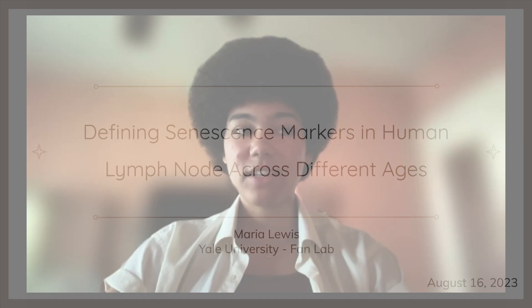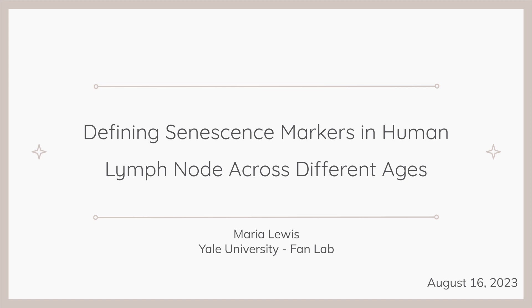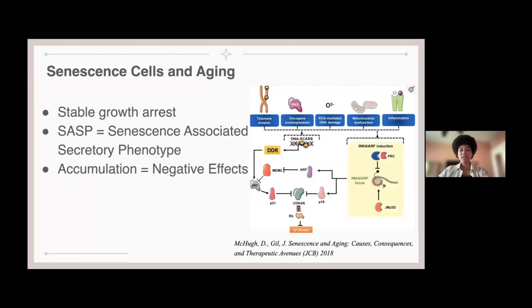Hi, my name is Maria Lewis, and I had the privilege to conduct research at BAN Lab at Yale University this summer. My presentation is on defining senescence markers in human lymph node across different ages.